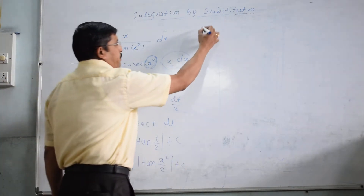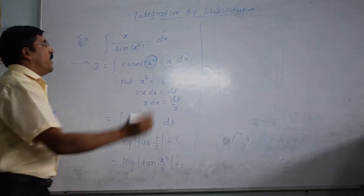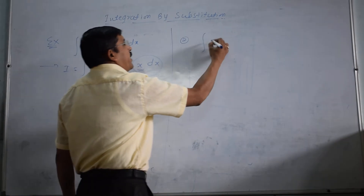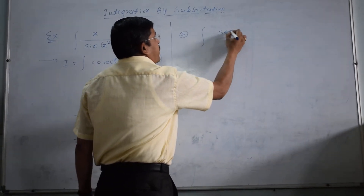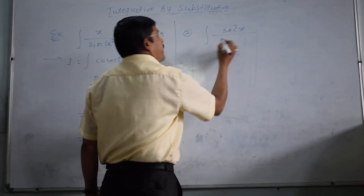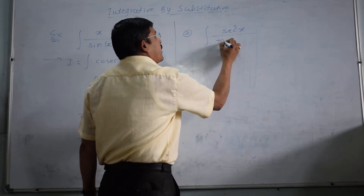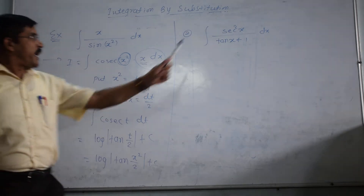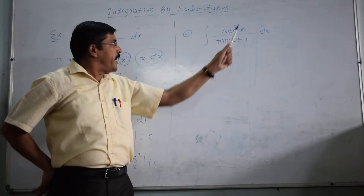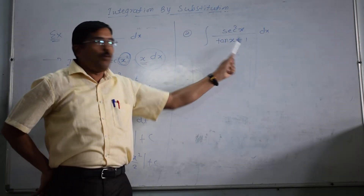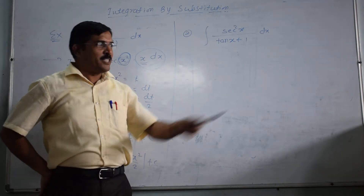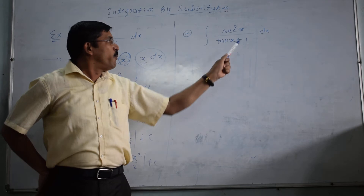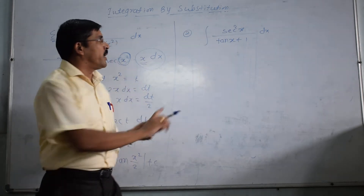Similarly, you can solve examples of substitution. Example number two: integral of sec²x divided by (tan x + 1) dx. We have derivative sec²x at numerator and denominator is tan x + 1. We know that the derivative of tan x + 1 is sec²x.